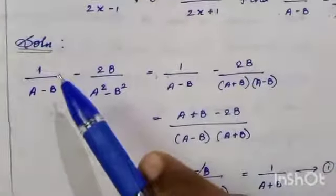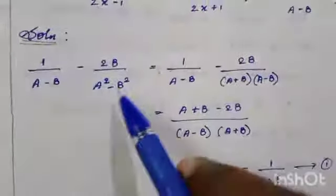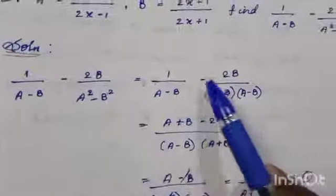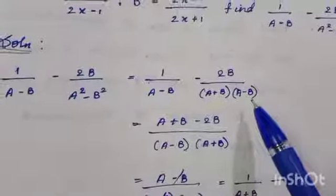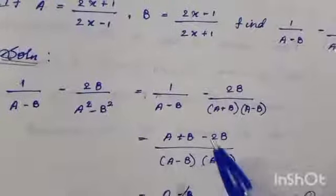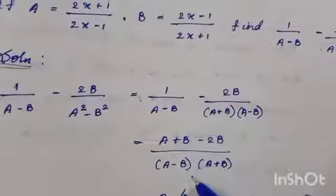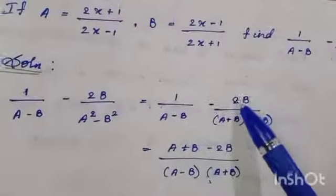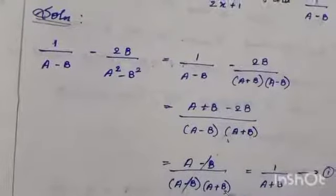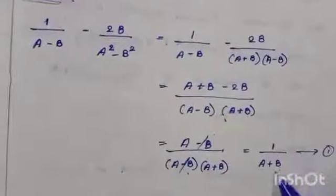First consider the expression: 1 by (a minus b) minus 2b by (a-squared minus b-squared). Simplify this first. Find the LCM of the denominators. Note a-squared minus b-squared equals (a minus b)(a plus b), so the common denominator is (a minus b)(a plus b). Multiply the first term's numerator by (a plus b), giving 1 times (a plus b). The second term already has denominator (a minus b)(a plus b), so just write minus 2b. Simplify the numerator: a plus b minus 2b equals a minus b. So (a minus b) divided by (a minus b)(a plus b) — the (a minus b) cancels — giving 1 by (a plus b). Call this equation 1.